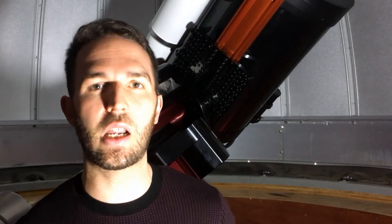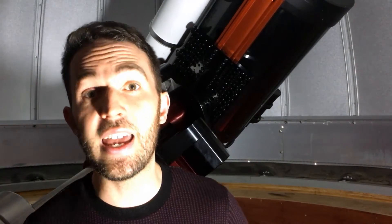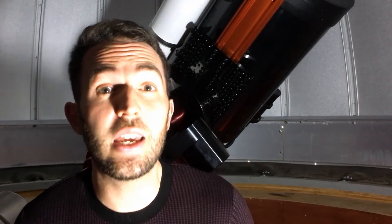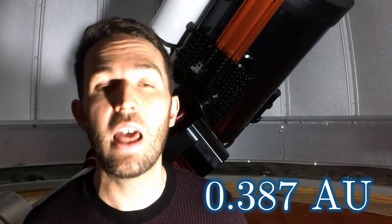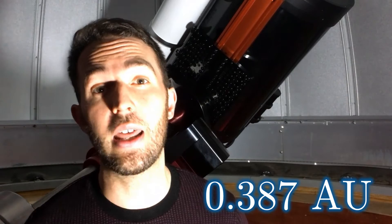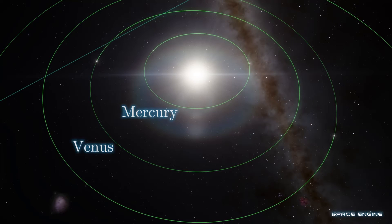It's of course the closest planet to the sun. Its distance to the sun on average is 0.4 astronomical units, about 40% that of the distance between the sun and the earth, and that gives it an orbital period of 88 days. So over the course of a year, whilst the earth goes around the sun once, Mercury goes around 4.15 times.